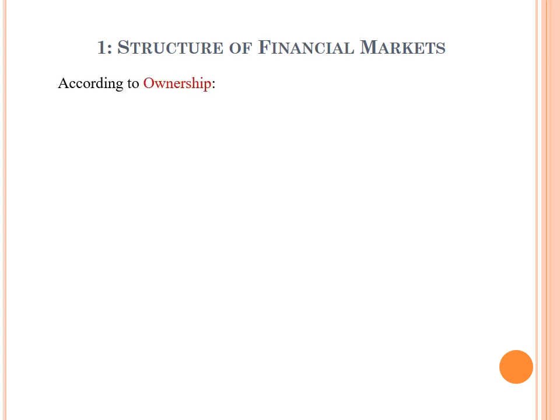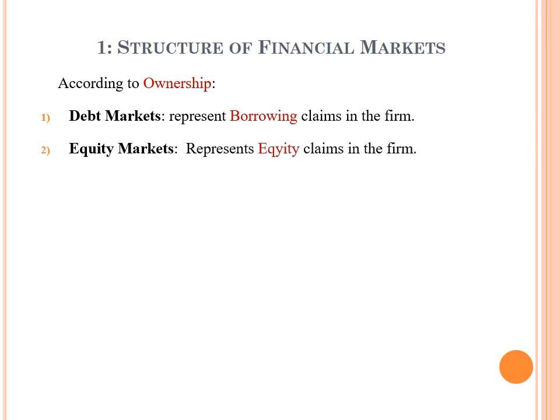According to ownership, financial markets could be categorized into debt markets, which represent borrowing claims in the firm, and equity markets, which represent equity claims in the firm. This categorization is according to ownership.